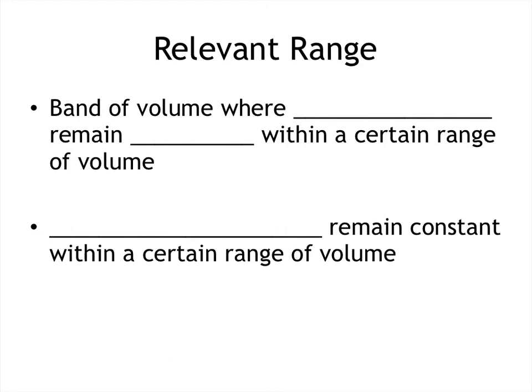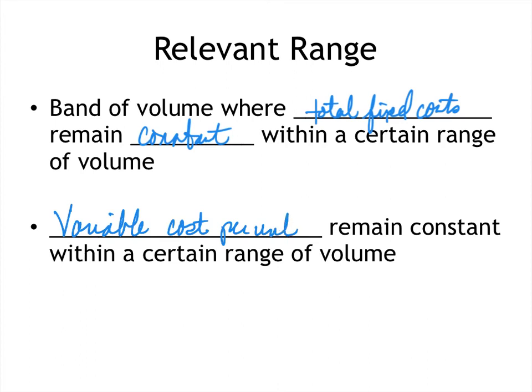Now we know that total variable costs change and total fixed costs stay the same. However, we have to really say within a relevant range. So a relevant range is a band of volume where total fixed costs remain constant within a certain range of volume and where your variable cost per unit remains constant within a certain range of volume.